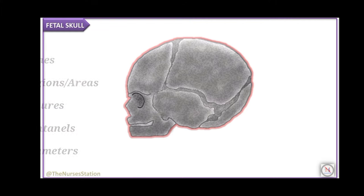The fetal skull is oval shaped. At term, it is larger in proportion to the fetal body and in comparison with the true pelvis. The fetal skull is the most difficult part of the baby to pass through the mother's pelvic canal due to the hard bony nature of the skull. However, it is compressible to some extent.